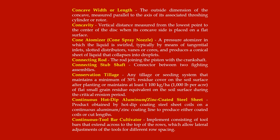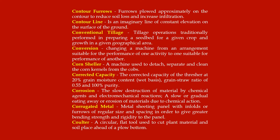Continuous hot dip aluminum or zinc coated steel sheet: product obtained by hot dip coating steel sheet coils on a continuous aluminum or zinc coating line to produce either coated coils or cut lengths. Continuous tool bar cultivator: implement consisting of tool bars that extend across to the top of the rows, which allow lateral adjustments of the tools for different row spacing.